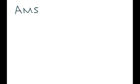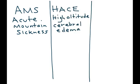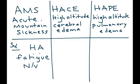There are three types of illnesses involved with altitude. There's AMS, which is acute mountain sickness; HACE, which is high altitude cerebral edema; and HAPE, which is high altitude pulmonary edema. For AMS, symptoms include headache, fatigue, nausea and vomiting, and dizziness.